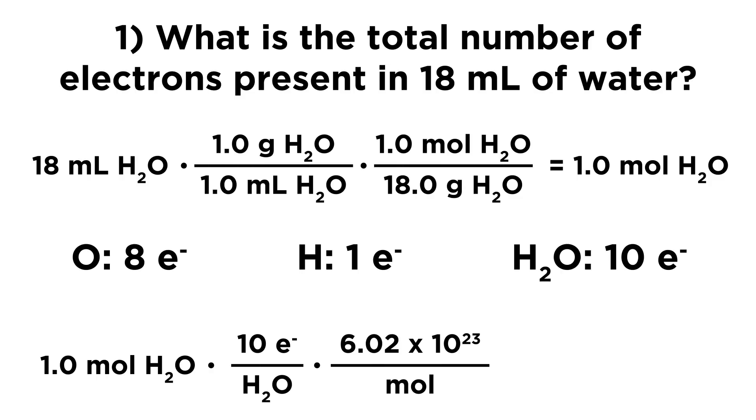So if we take our one mole of water, what we can do is multiply by 10 electrons per water molecule, because we just figured out that there are 10 electrons in every water molecule. And now what we can do is multiply by Avogadro's number, because we know that there are 6.02 times 10 to the 23rd items in a mole. And it doesn't matter what that item is. It could be electrons, could be molecules, could be basketballs. So it's just that that is the definition of a mole. It's that many items. And so we're going to multiply this. We had one mole of water, of water molecules, which means we have 10 moles of electrons times Avogadro's number means we have 6.02 times 10 to the 24 electrons. So that's going to be the answer to the first question.